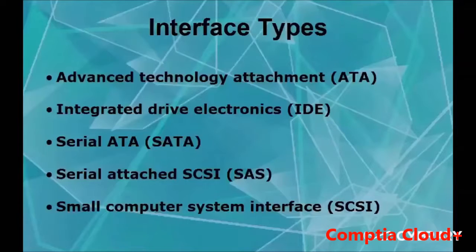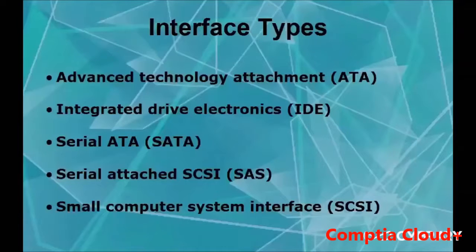SATA, or Serial ATA, is faster and better than regular ATA or PATA. SATAs are also hot-swappable, used on the motherboard, and are the most common type. There are three versions: SATA-3 operates at 6 Gbps, SATA-2 at 3 Gbps, and SATA-1 is pretty much not used anymore. SAS, or Serial Attached SCSI, is most commonly used inside RAIDs and servers, and describes how the motherboard communicates with the hard drive.